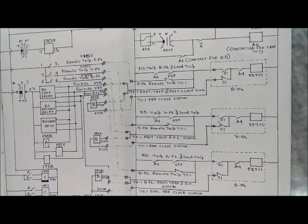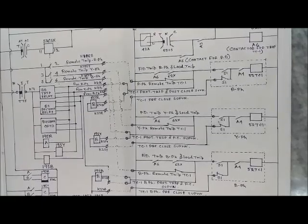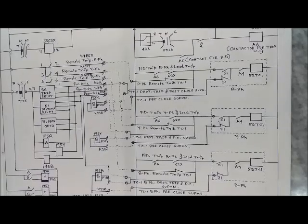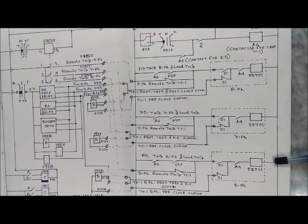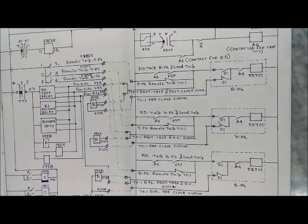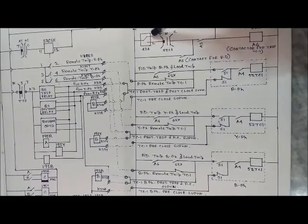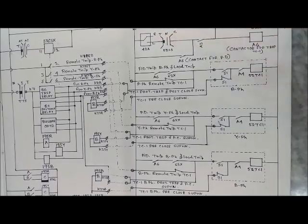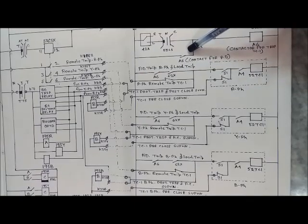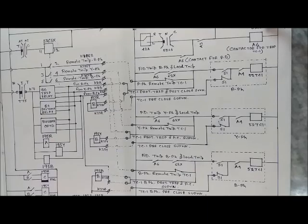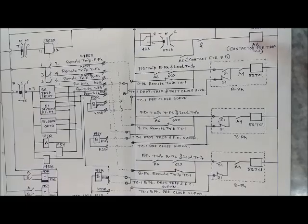For the trip circuit, the diagram shown is for TC1 of the circuit breaker. The right-hand side portion shows the circuit breaker portion and the left-hand side shows the control and relay portion. 52TC1 is trip coil one of the circuit breaker for R phase, Y phase, and B phase. Similarly, there exists trip coil two. TNC is the local control switch, 43A is the local/remote selector switch. A5 is the contact for pole discrepancy trip, and A6 with 62X is the contactor for trip one.